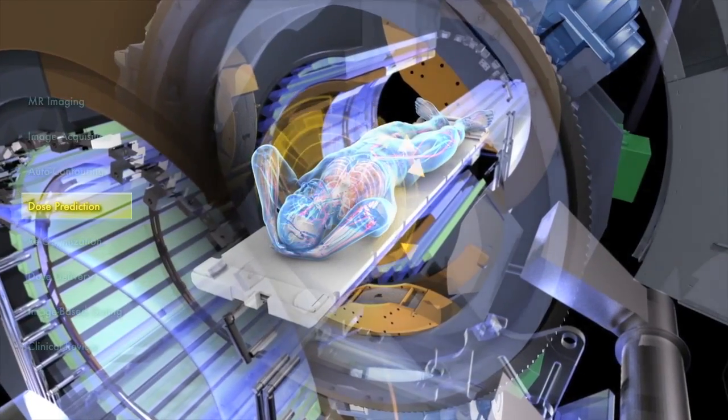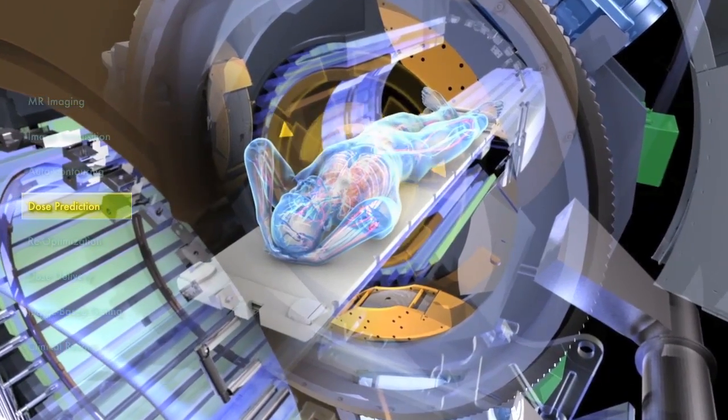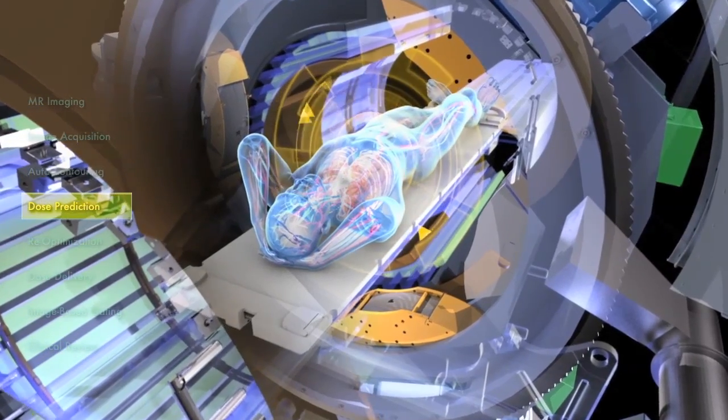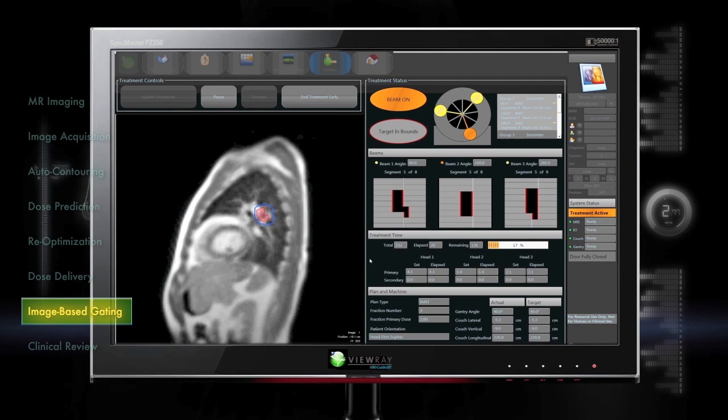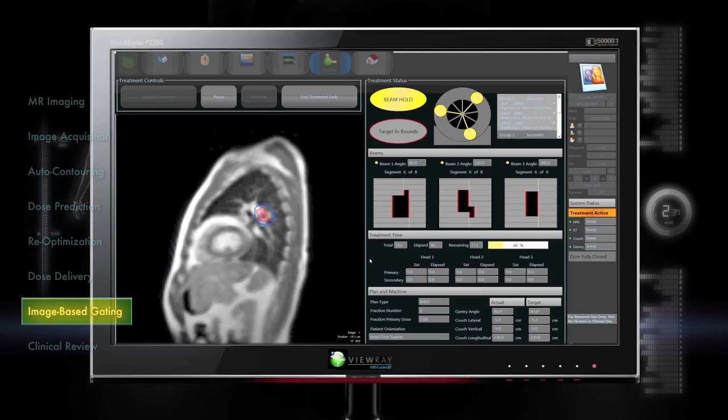Real-time imaging of both the target and surrounding organs means the physician knows precisely where the dose is being delivered as it's being delivered. Adaptive motion compensation software enables the system to target moving tissues during treatment.